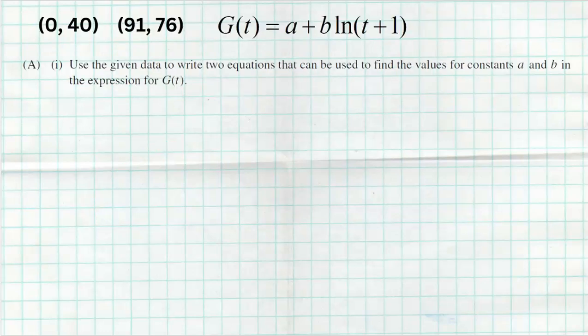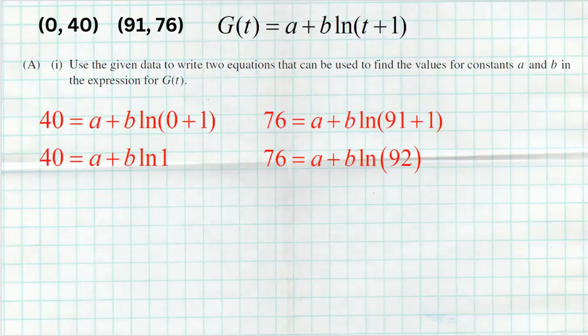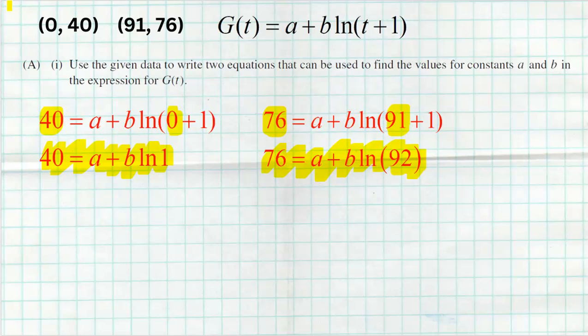The first question is to use the given data to write two equations that can be used to find the values of constants a and b. They strategically chose this model because if you use the logarithmic regression on your calculator, it's a plus b natural log of x — not x plus one — so you can't use your calculator to get the model here. You've got to do the work by hand. All we have to do is use the two given points. We plug 40 in for g and zero for t to get the first equation. Then on day 91, there were 76,000 units sold, so we plug those in — adding 91 and 1 to get 92 — giving us our second equation to solve for a and b.